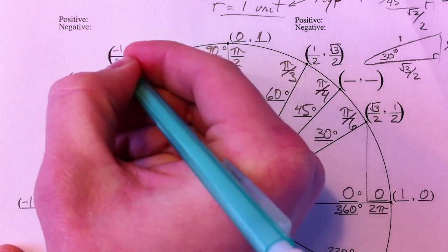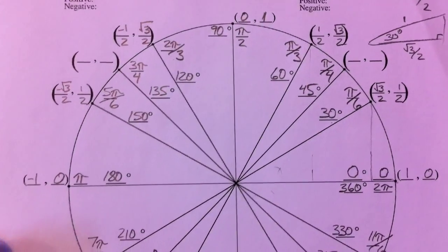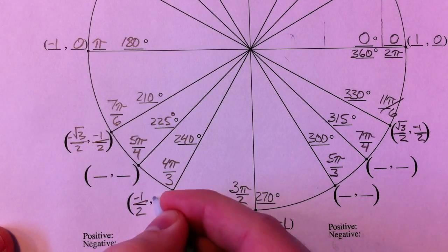So then over here, the x's are negative. You've got square root of 3 over 2. Down here, the x is negative still, but so is the y.